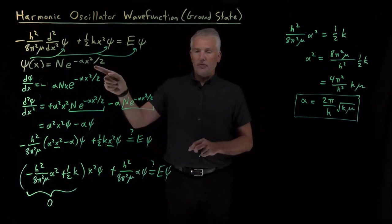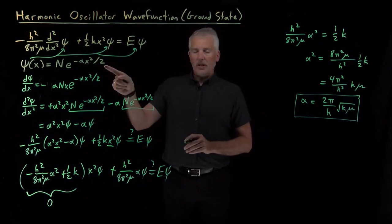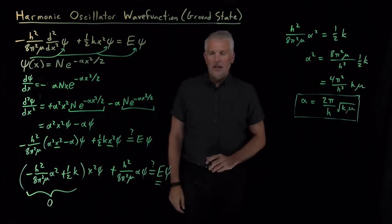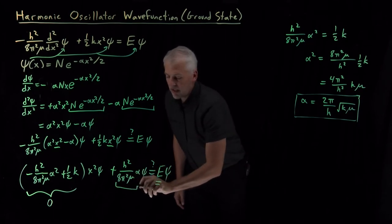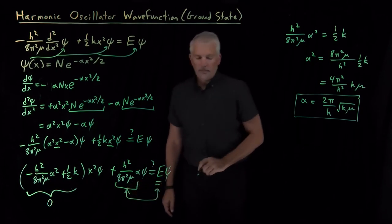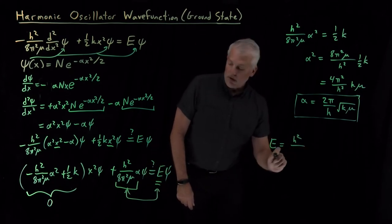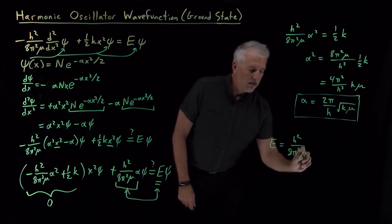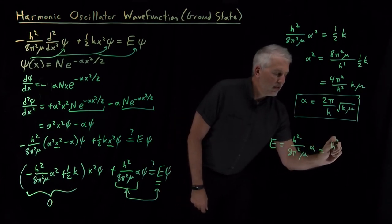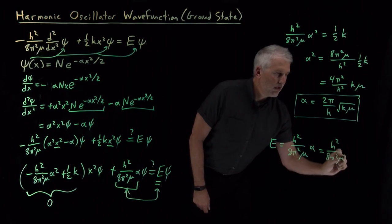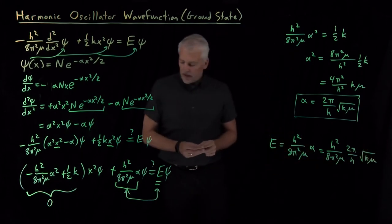So not just any e to the minus alpha x squared over 2 will be a solution to the Schrödinger equation — only if alpha takes on this specific value will the x squared times wave function term from kinetic energy cancel the x squared times wave function term from potential energy. When that cancellation happens, this function solves Schrödinger's equation. With that particular value of alpha, we've also determined the energy E: the energy equals h squared over 8 pi squared mu times alpha, and there will be significant cancellation.